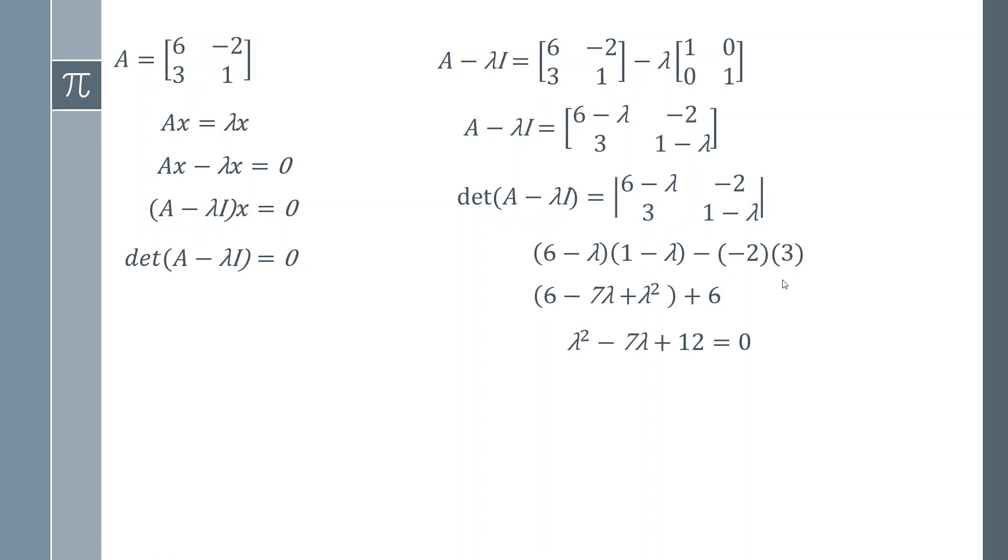So this is called the characteristic equation, and the solutions to this equation are your eigenvalues. You can solve it with the quadratic formula, or if it's nice and simple like this, we can simply factorize. So we factorize it, and then we're simply solving that equation. We want each of the brackets to be zero, and the first eigenvalue that does that is 3. And for the second bracket, we get an eigenvalue of 4.